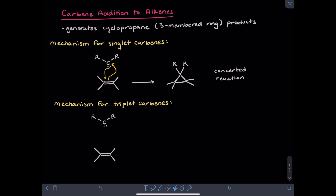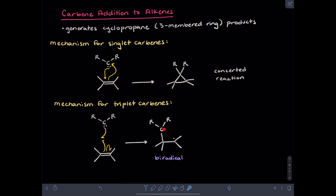In the case of the triplet carbene, where you have two unpaired electrons instead of a lone pair, a radical mechanism will occur instead. In the first step, a new carbon-carbon bond is generated by using one electron from the pi bond and one electron from the carbene. The other electron from the pi bond goes to one of the carbons of the alkene to generate a radical. The carbene-carbon now has a single unpaired electron, and one of the carbons of the alkene has an unpaired electron as well — this is called a biradical intermediate. Because the two radicals are in the same compound, an intramolecular reaction forms a new carbon-carbon bond, bringing those two radicals together to form the three-membered ring.